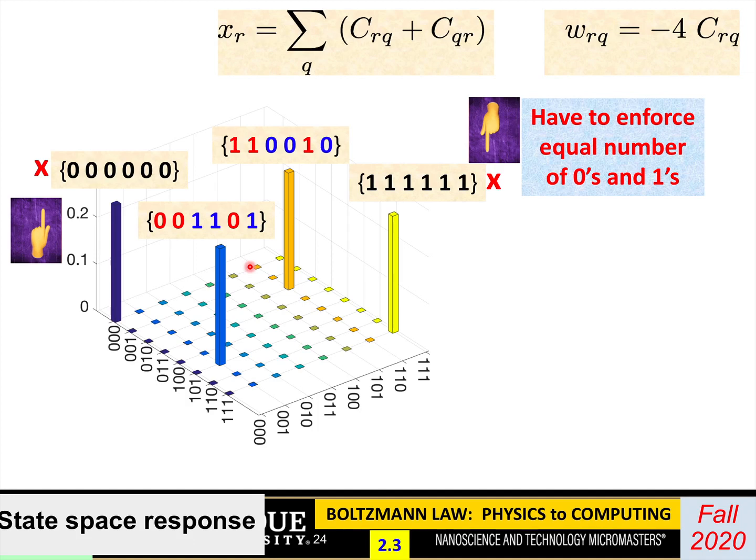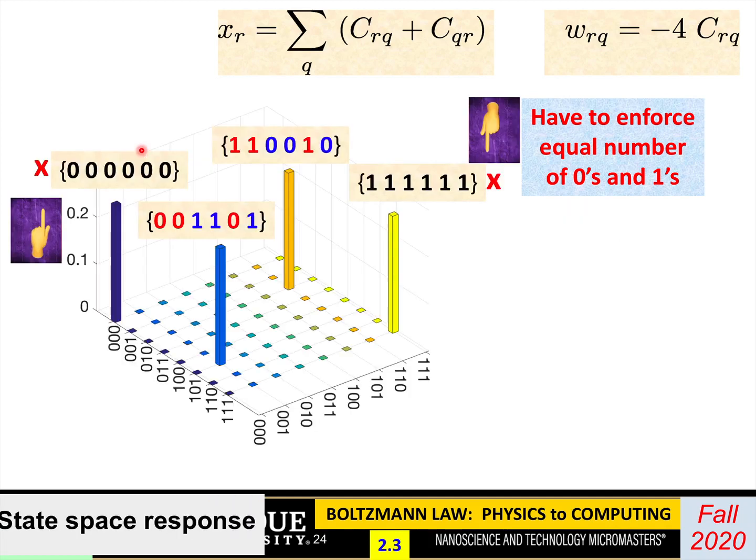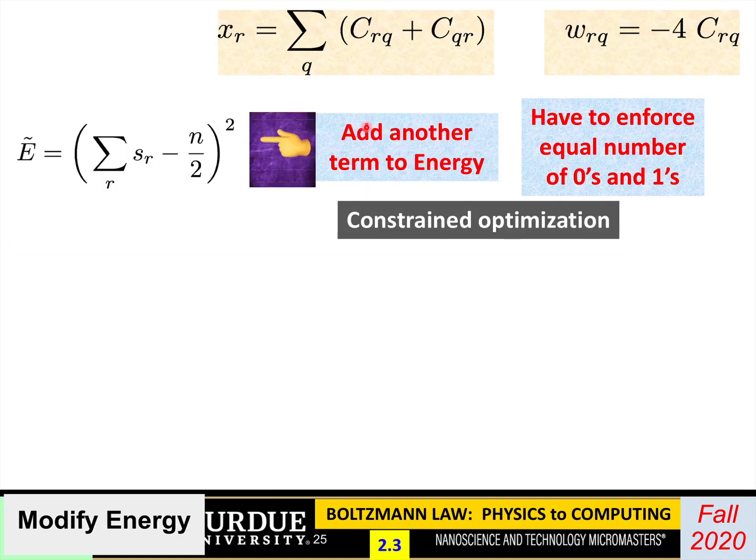In all optimization problems, there is a cost function. What the problem does is try to minimize that cost. And in these Boltzmann circuits, what is minimized is the energy. So energy is the cost function. So the way you do it is I could add a term like this to the energy. When I add up the values of all the spins, the answer should be equal to half the total number. So if I add six, the answer should be three. And then you can see that these ones, when I add them all up, I get three. But these ones, when I add them up, I get zero here and I get six there. So those are not acceptable. And if I add a term like this to the energy, it will discriminate against those solutions.